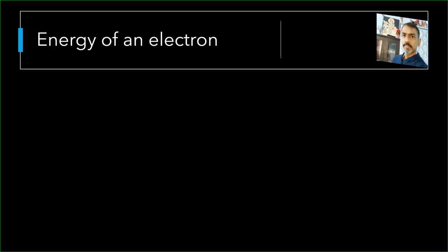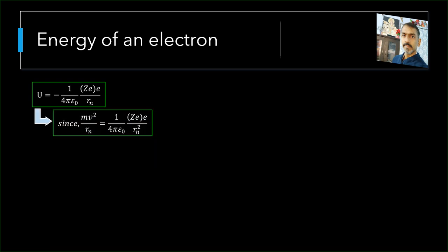The energy of the electron in an orbit is the sum of its kinetic energy and potential energy. Formula of potential energy of two charge system, as discussed in chapter 2, is 1 by 4π epsilon naught into product of charges divided by distance between them. Hence potential energy equals to minus 1 by 4π epsilon naught into ze square by rn. Since necessary centripetal force is provided by electrostatic force, that is mv square by rn equal to 1 by 4π epsilon naught into ze square by rn square. Therefore kinetic energy half mv square equals to 1 by 8π epsilon naught into ze square by rn.